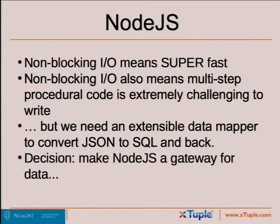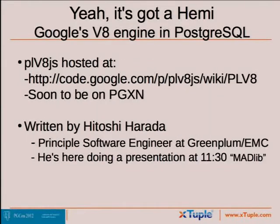So we decided to just make Node a gateway for data, and we decided to look at how we could get this stuff out of Postgres directly, taking advantage of the object-oriented attributes that Postgres already has. We found PLV8, hosted on Google Code, written by Hitoshi Harada, who is here somewhere — there he is in the back! The module is now hosted on PGXN. He's principal software at Greenplum and will be doing a presentation right after mine.